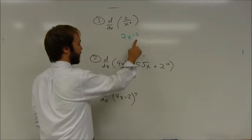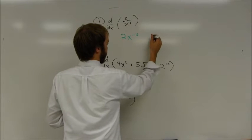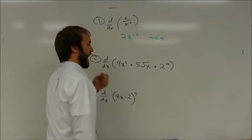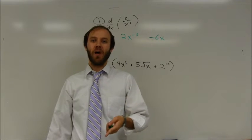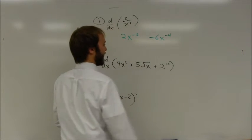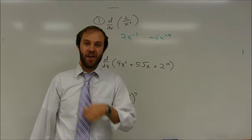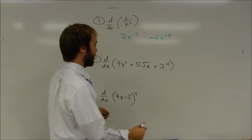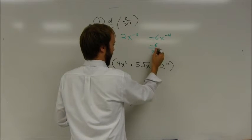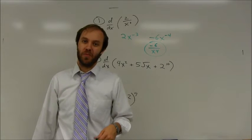The power rule says I can multiply my exponent by my coefficient. So that's going to give me negative 6x. And remember, you drop your power by one, which takes my power down to negative 4. So negative 6x to the negative fourth. If you wanted to rewrite that with a positive exponent, you can also write that as negative 6 over x to the fourth. Either one of those answers would be acceptable in most cases.